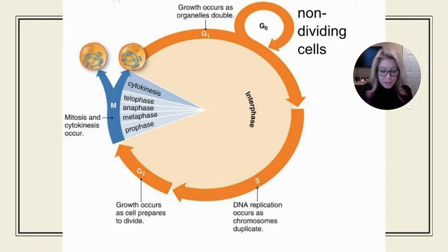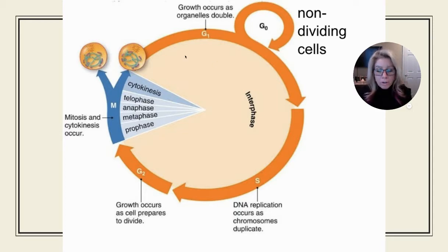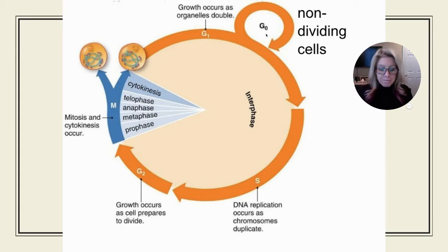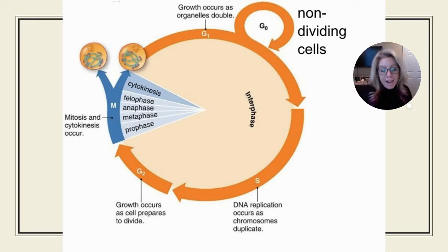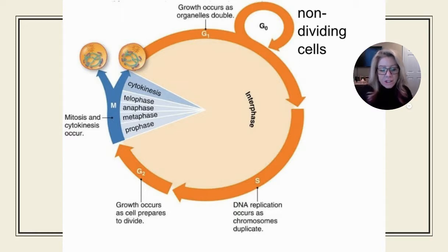For your notes on 5.1, stages of interphase: G1 — the cell grows larger, organelles increase, and the cell can enter G0 and stop dividing. The S stage is for DNA synthesis — chromosomes are all replicating. G2 is primarily focused on proteins being synthesized in anticipation of the M stage. The M stage: mitosis is nuclear division, producing two nuclei containing the exact same DNA — one nucleus for each cell. Cytokinesis is division of the cytoplasm, forming two cells.